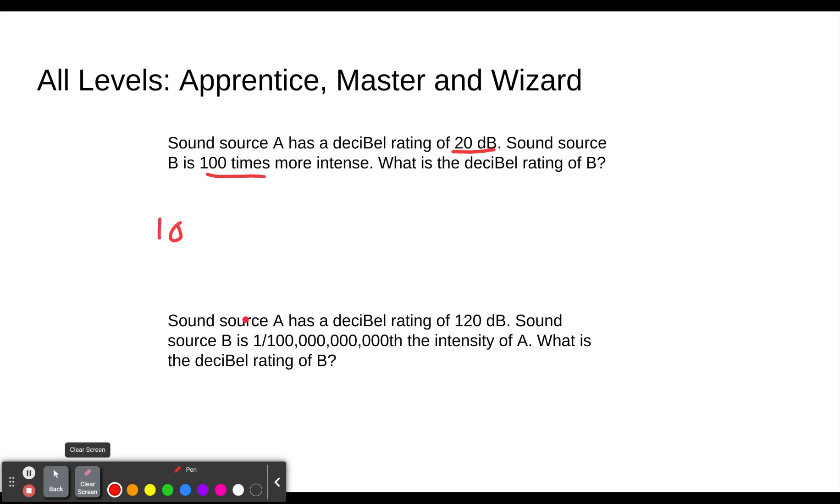So 100. There are two zeros there, so that's 10 to the second power. We take 10 to the second, and we just put a zero after it. So it's going to be 20 times greater because it's more intense. That means we're going to add 20. So we take the 20 that we had plus 20, and so your final answer would be 40 decibels.